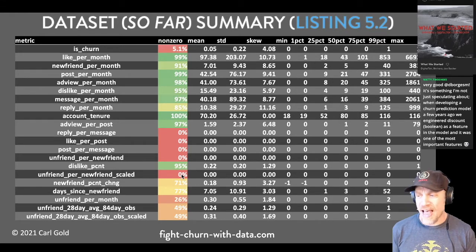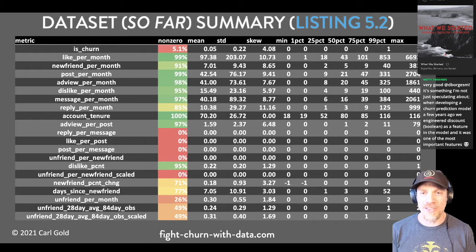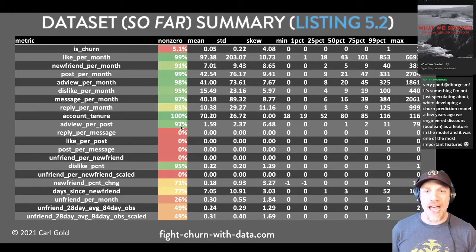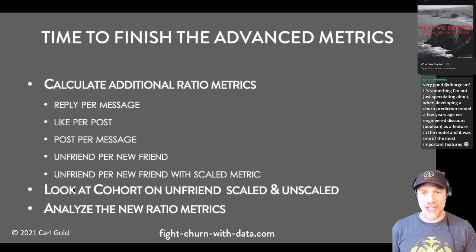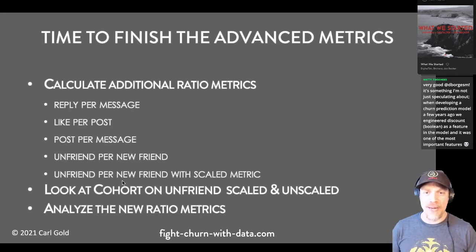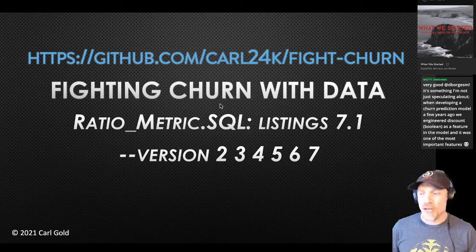That's going to be one of the tasks on today's stream. So for today, the first thing to do is finish the dataset by calculating these additional ratio metrics. Then we'll do some analysis on the unfriend metric and then analyze the new ratio metrics we calculate. After that, we're going to prepare the data for regression.